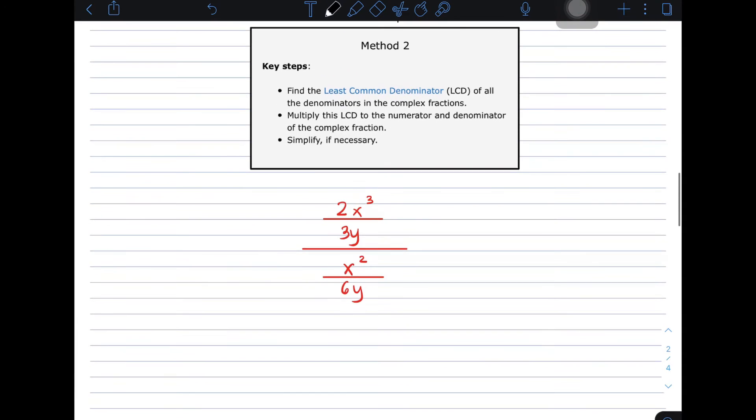As you can see, we have here the same problem, or the item number 1. As you can see, you have here your denominator as 3y. This is the denominator of your numerator. And then, this is the denominator of your denominator. You need to get the LCD.